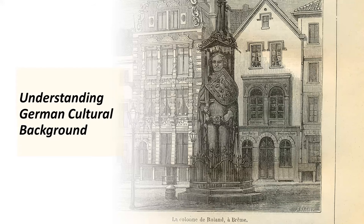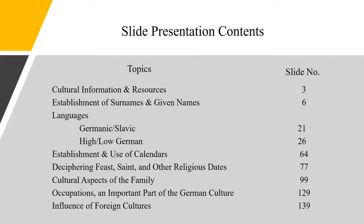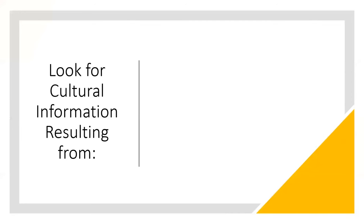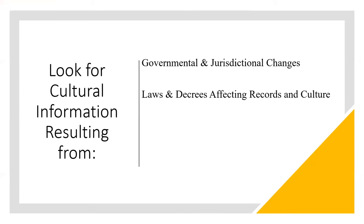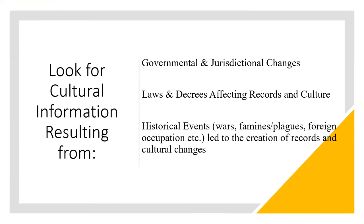Welcome to Lecture 5 in a series of 10 lectures on German genealogical research. This lecture is on understanding the German cultural background. Germany's history and culture have continually impacted each other. Cultural information often results from governmental and jurisdictional changes, laws and decrees affecting records and culture, and historical events such as wars, famines, plagues, foreign influence, etc., that led to the creation of records and cultural changes.